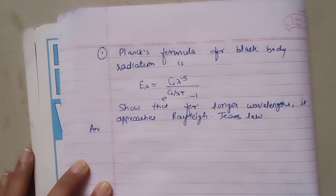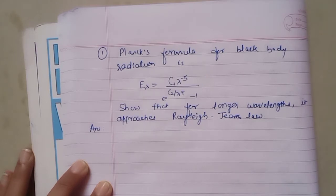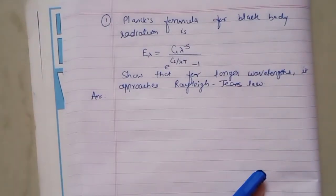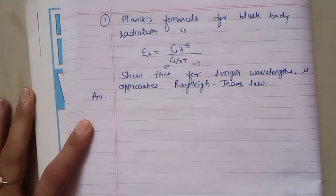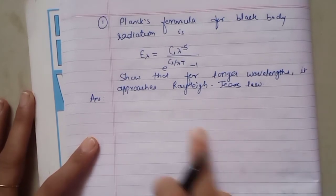Hello, in an earlier lecture we have seen what is Rayleigh-Jeans law, what is Wien's law, and what is Planck's law. I have shared the link for that earlier lecture in the description box. Today we are going to derive how we can reduce Planck's formula at longer wavelengths to Rayleigh-Jeans law, and also how we can reduce Planck's formula to Wien's displacement law at shorter wavelengths.